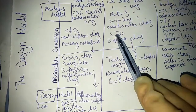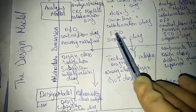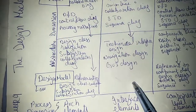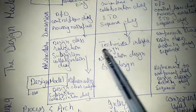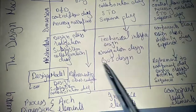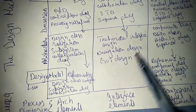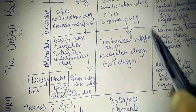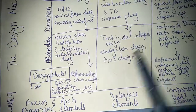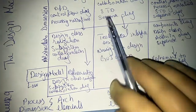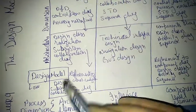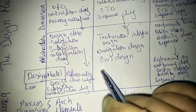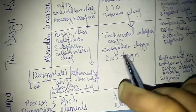There are scenario-based use cases, like STD diagrams. You take a design and transform it into a design model. The interface design deals with human interaction with software — such as UI design.